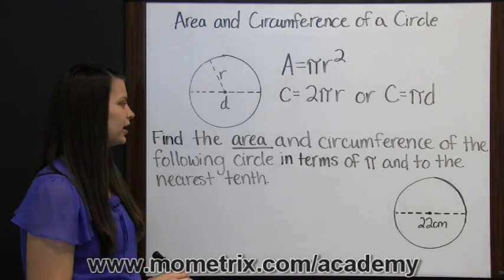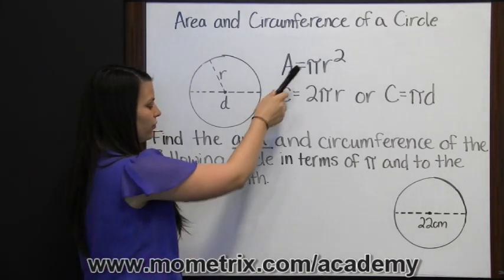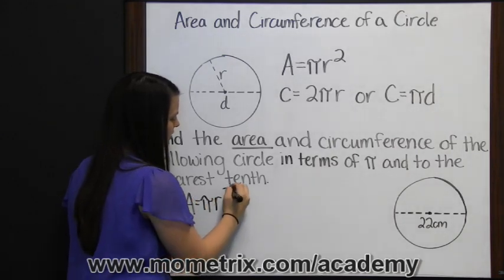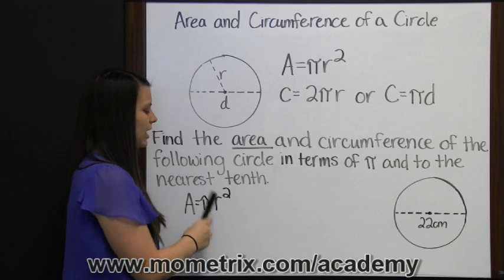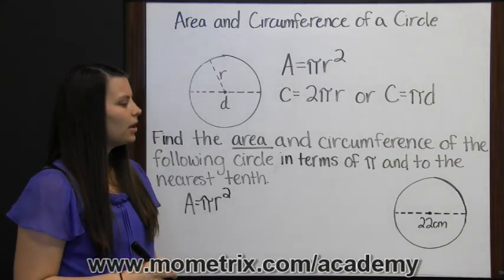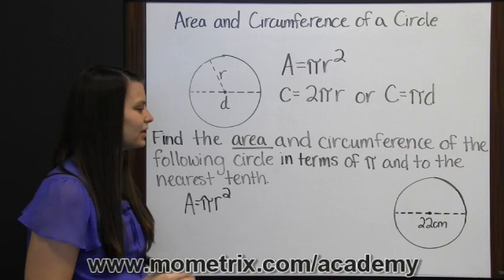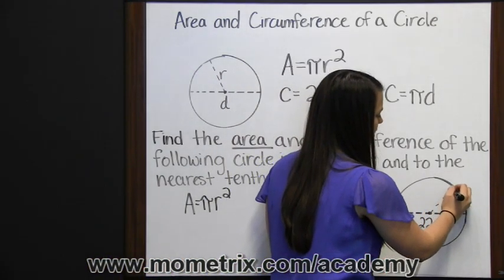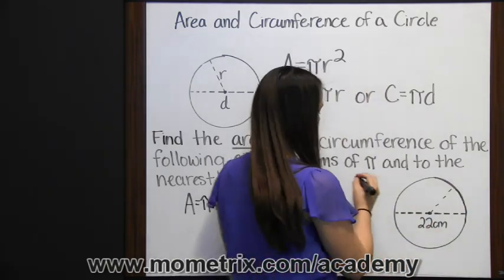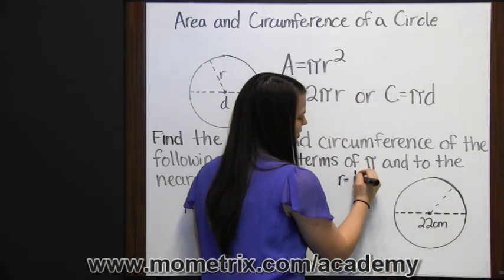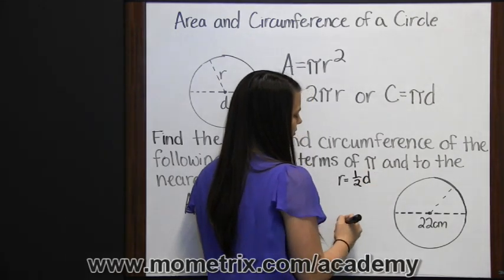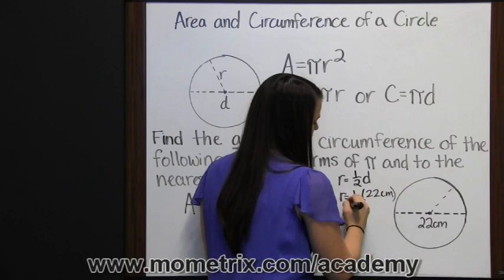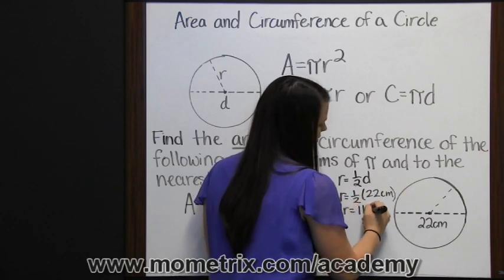We'll start with area. The first thing we're going to do is write our formula for area. Area is pi times radius squared. Now we need to substitute our radius, but they only gave us the diameter. Keep in mind that the radius goes halfway across your shape, or that it's half the diameter. The radius is half of 22 centimeters, which means that the radius is 11 centimeters.